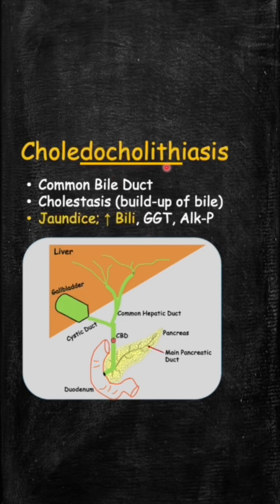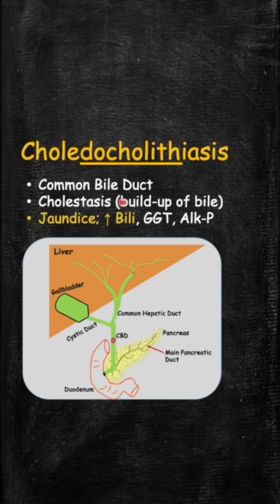Next is choledocholithiasis. Remember, -lithiasis means stone, and docho means duct — so here the stone is stuck in the common bile duct. The problem is that it's not only blocking bile drainage from the gallbladder, but bile from the liver also can't drain. Therefore, we get cholestasis, which means jaundice due to elevated bilirubin, along with the other cholestasis labs: elevated GGT and alkaline phosphatase.